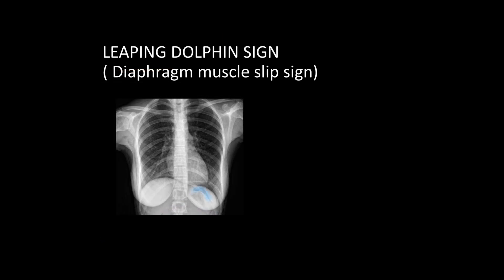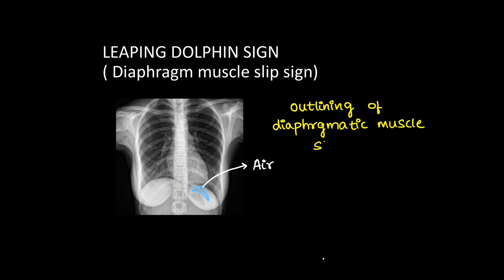Next we have the leaping dolphin sign. Here we can see a dolphin-shaped collection of air. The concept behind this is there is outlining of diaphragmatic muscle slips by free air, and hence they are seen prominently in the shape of a dolphin.